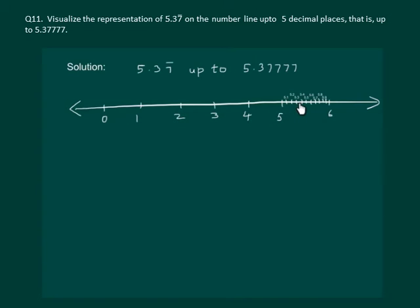So let us magnify and further divide it into 10 equal parts. On magnification we get the following number line and now the first division represents 5.31, next is 5.32 and so on. That means 5.37 bar which we have to plot up to 5 digits will lie between 5.37 and 5.38.